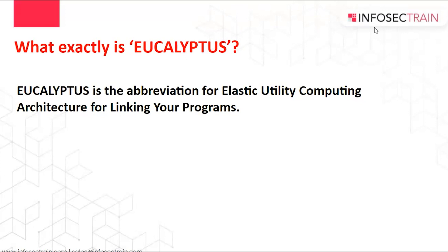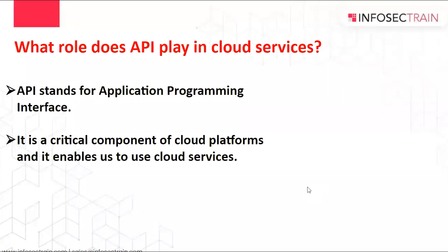What exactly is Eucalyptus? Eucalyptus is the abbreviation for Elastic Utility Computing Architecture for Linking Your Programs. It is an open-source software platform for delivering Infrastructure as a Service in a hybrid cloud computing or private cloud computing environment. In cloud computing, Eucalyptus combines existing virtualized frameworks to create cloud resources for Storage as a Service, Network as a Service, and Infrastructure as a Service.